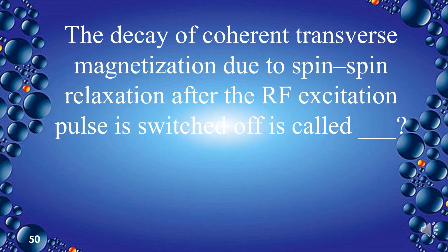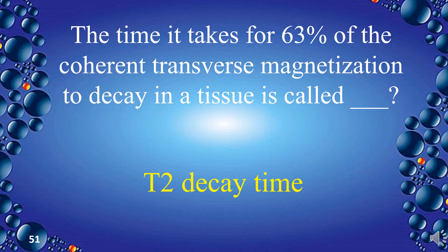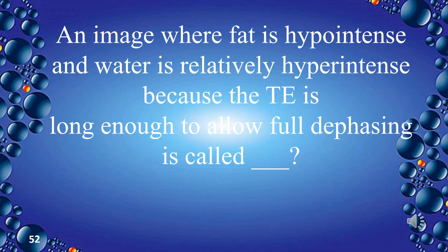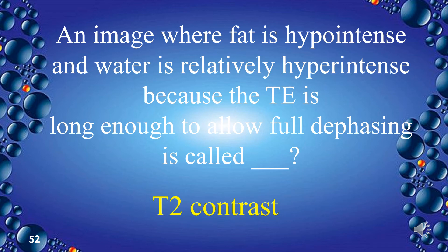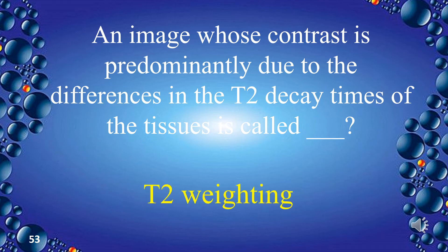The decay of coherent transverse magnetization due to spin-spin relaxation after the RF excitation pulse is switched off is called T2 decay. The time it takes for 63% of the coherent transverse magnetization to decay in a tissue is T2 decay time. An image where fat is hypointense and water is relatively hyperintense because the TE is long enough to allow full dephasing is called T2 contrast — the opposite of T1 contrast. An image whose contrast is predominantly due to differences in T2 decay times is called T2 weighting.